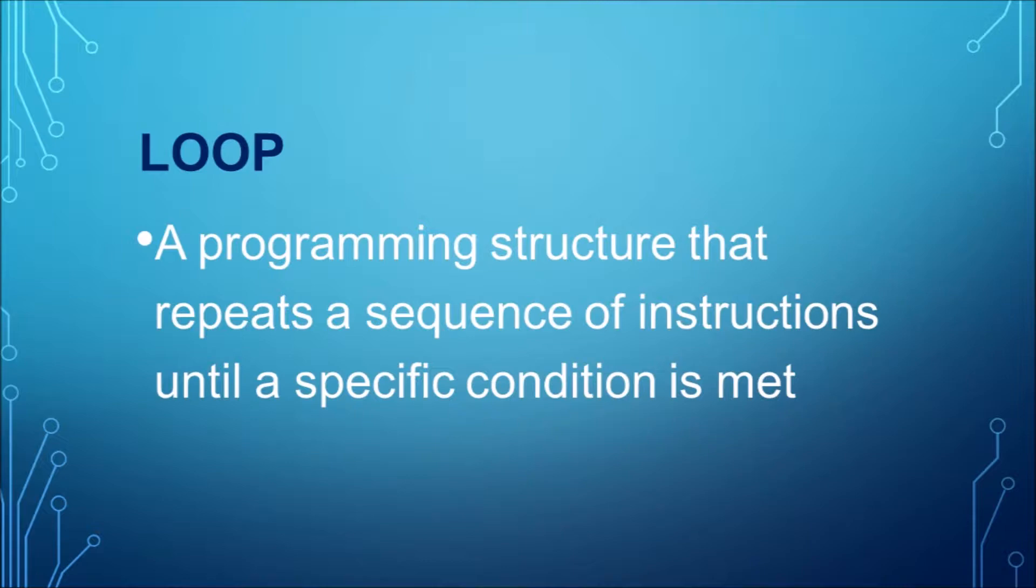Two major types of loops are for loops and while loops. A for loop will run a preset number of times, whereas a while loop will run a variable number of times.